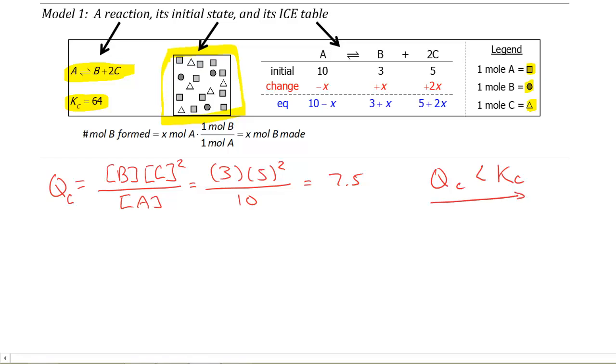We need Q to increase until it reaches K. The only way for it to do that is to produce more products because the products are in the numerator of the expression. So we know we're going to shift to the right.